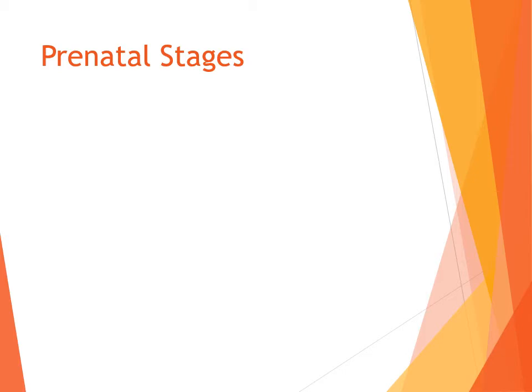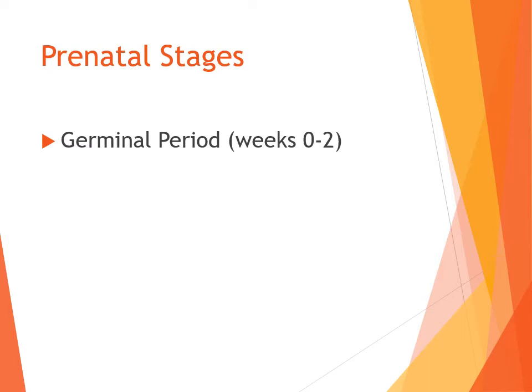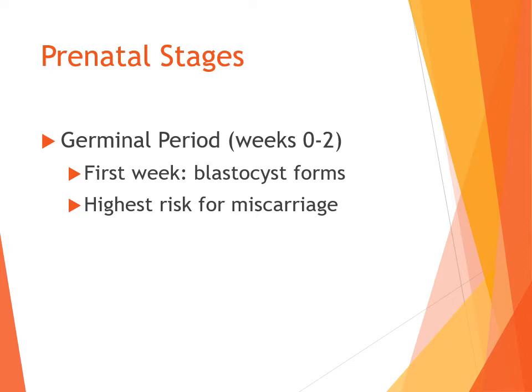We're going to go over some prenatal stages. The very first stage, the germinal period, is from conception until about week two of gestation. Within the first week, that zygote turns into a blastocyst — a group of cells, since the zygote has started to divide.